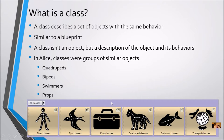In ALICE, classes were grouped as similar objects. We had the biped class, the flyer class, the prop class, the quadruped class, and so on. So when you were programming in ALICE, you were used to working with classes.